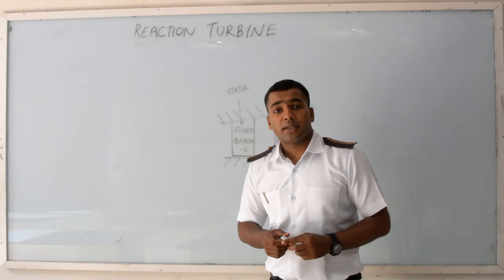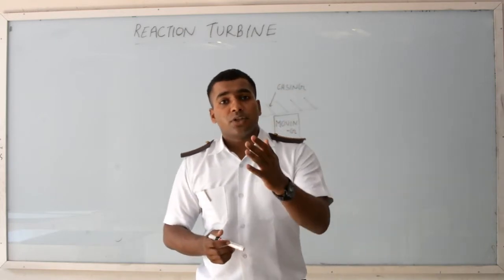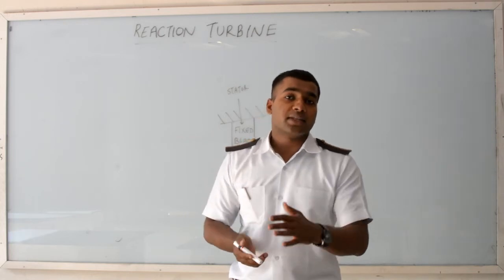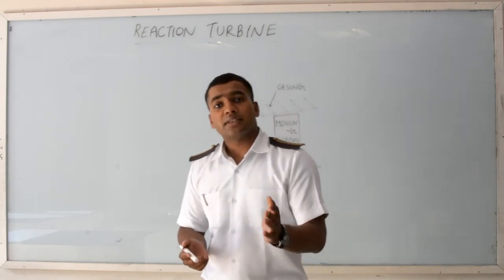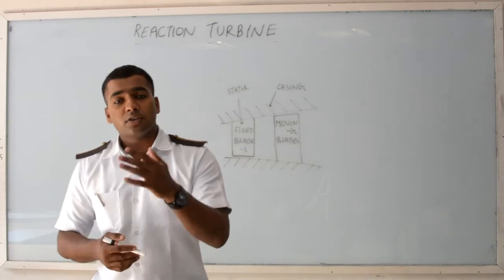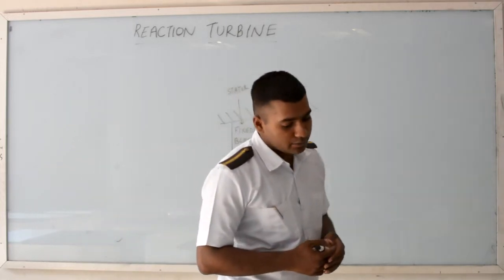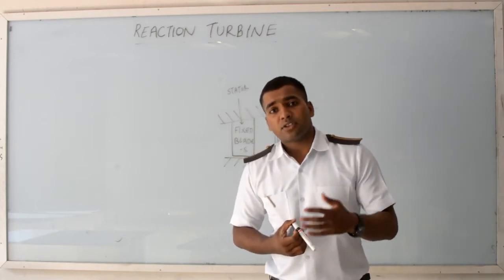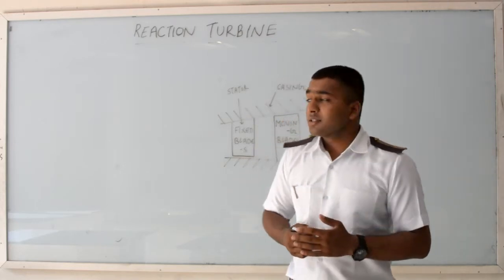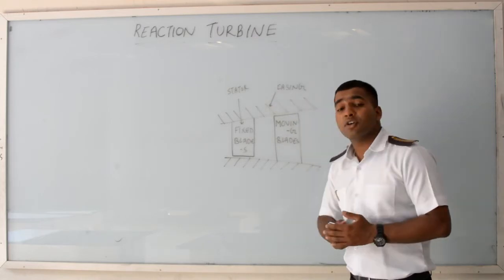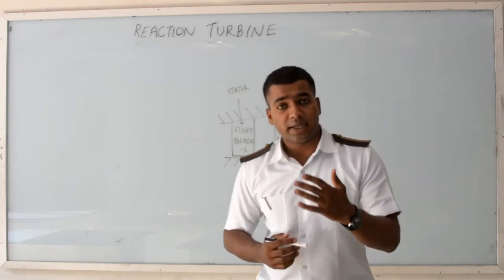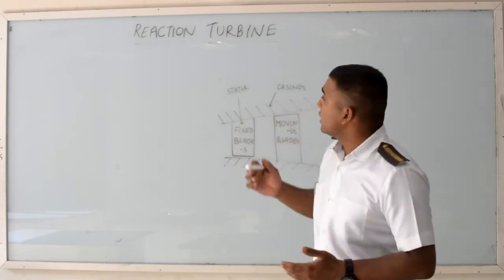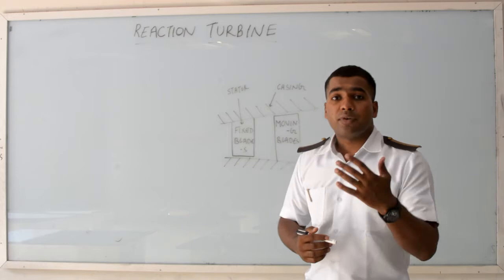In a Reaction Turbine, there are stationary blades and moving blades. The pressure drop will take place in the stationary blades as well as in the moving blades. The type of blades used in a Reaction Turbine is the airfoil type, whereas the type of blades used in an Impulse Turbine is the profile type.